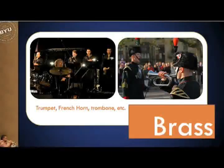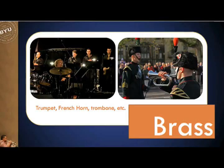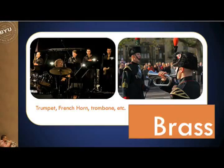Next we have brass instruments — another family — including trumpet, French horn, trombone, and tuba. Now this picture on the left shows one of the problems with using this classification system. You see a drummer in the foreground of what looks like a jazz group, and in the background people are playing saxophones — but those saxophones are made out of brass. So why did we call them woodwinds? In the old system they were called that because they had a reed that vibrated rather than just the lips, but that's one of the problems the S-H system clears up.